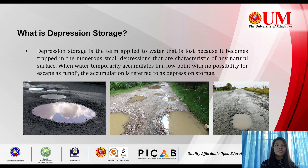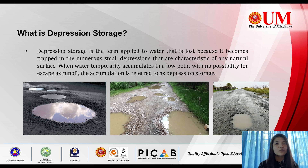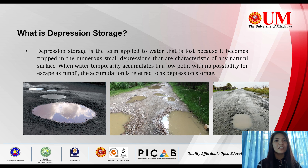So, what is depression storage? Depression storage is a term applied to the water that is lost because it becomes trapped in the numerous small depressions that are characteristics of any natural surface. When water temporarily accumulates in a low point with no possibility for escape as runoff, the accumulation is referred to as depression storage. Some examples are potholes, and the precipitation stored in these depressions is then either removed through infiltration into the ground or by evaporation. The relative importance of depression storage in determining the runoff from a given storm depends on the amount and intensity of precipitation in the storm.